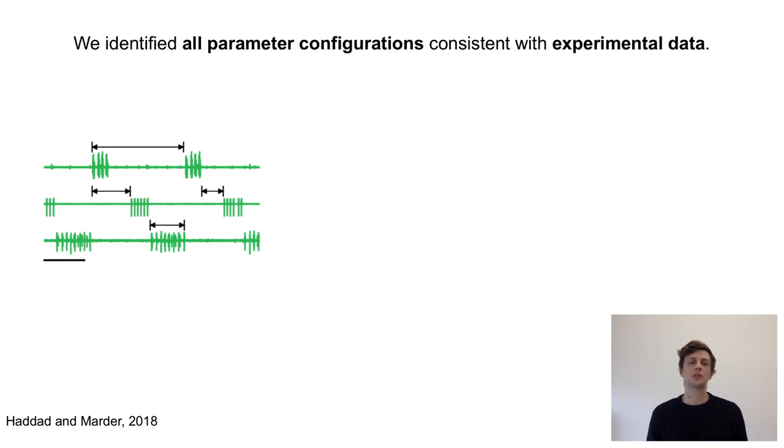To do so, we wanted to identify all parameter configurations that are consistent with experimentally observed data. However, identifying the entire space of data-compatible parameters is challenging, and we recently introduced a tool that is based on deep neural networks to address this challenge.